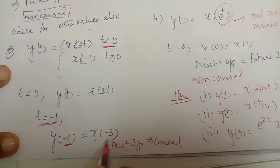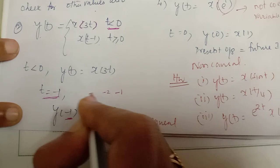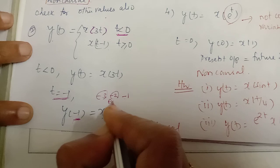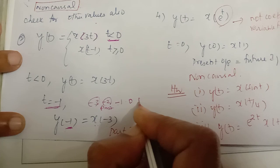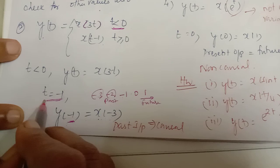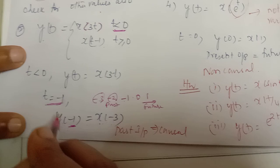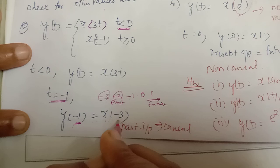For t = -1, the past values are -2 and -3, while future values are 0, 1, 2, 3, etc. The present value is -1. Since x(-3) is a past value relative to t = -1, the output at the present time depends on a past value of input. Therefore, the system is causal for this interval.